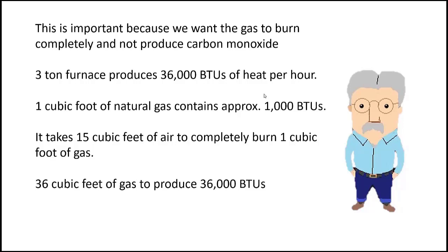So we need 36 cubic feet of gas to produce 36,000 BTUs. We're going to multiply 36 times 15. That's 36 cubic feet of gas times 15 cubic feet of air. And that equals 540 cubic feet of air that that draft inducer fan has to blow through that furnace every hour to completely burn the natural gas.